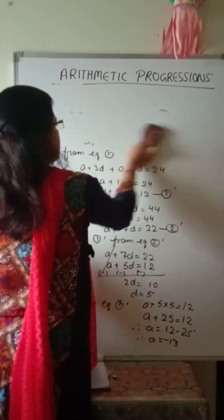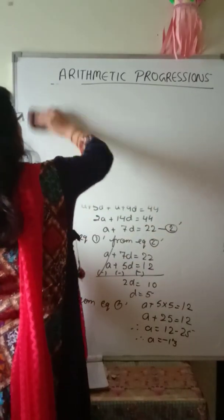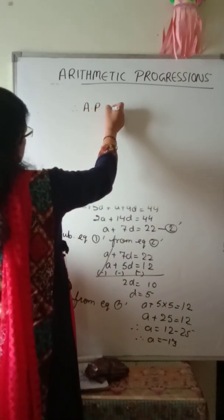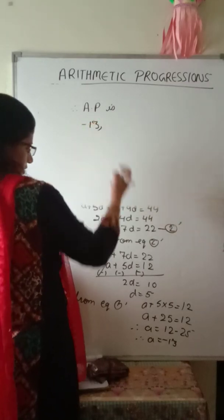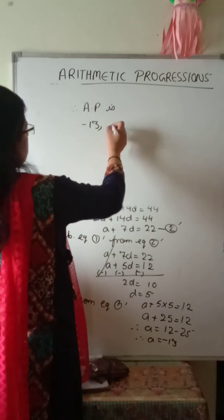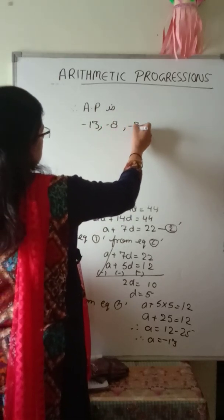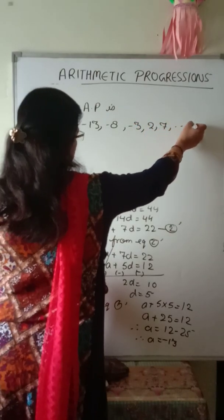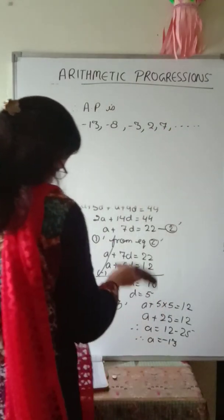Therefore the AP starting from A equals minus 13 with D equals 5 is: minus 13, minus 8, minus 3, 2, 7 and so on. This completes question number 18.